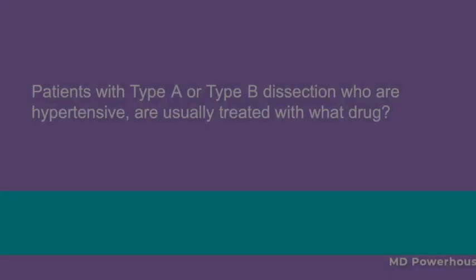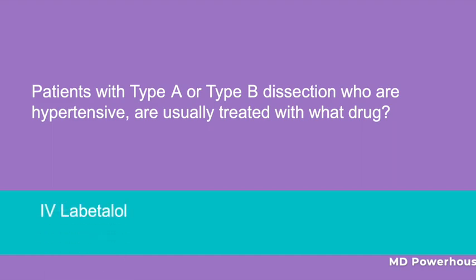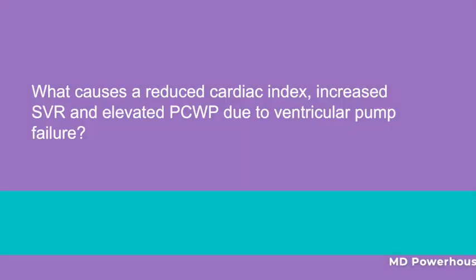Patients with type A or type B dissection who are hypertensive are usually treated with what drug? What causes a reduced cardiac index, increased SVR, and elevated PCWP due to ventricular pump failure?